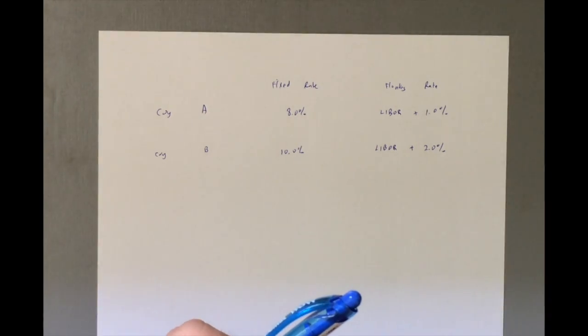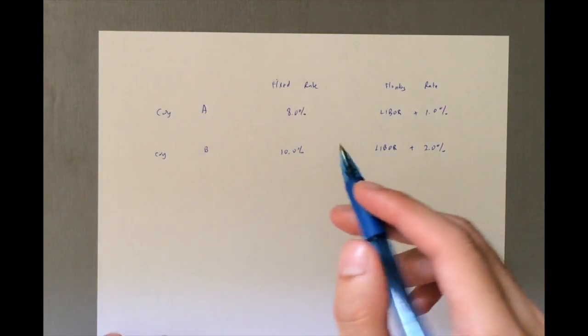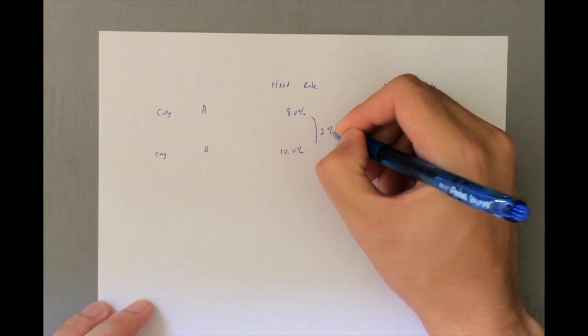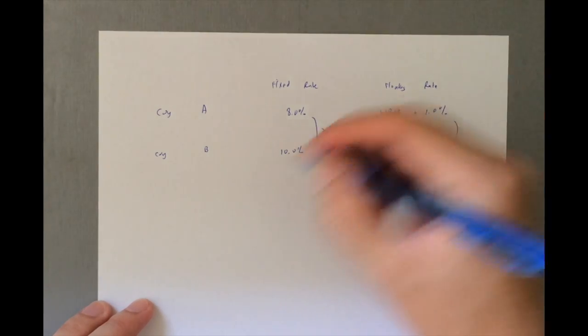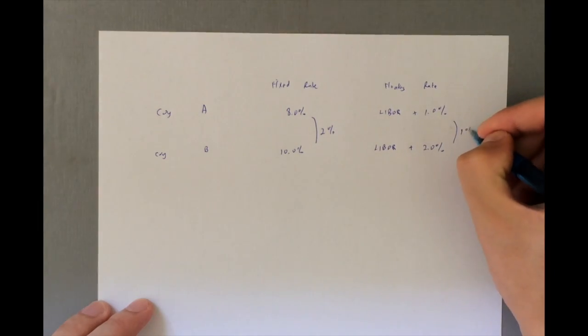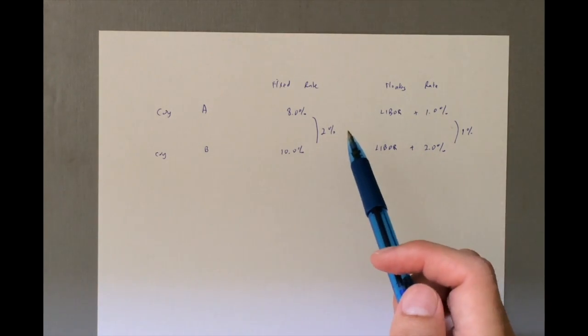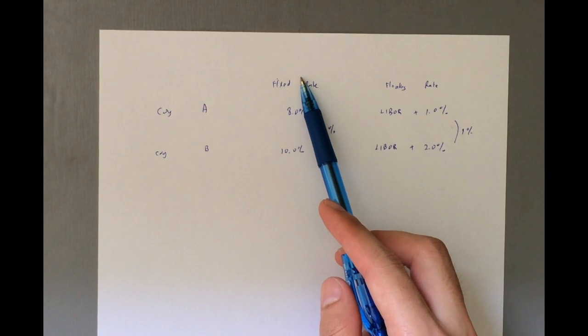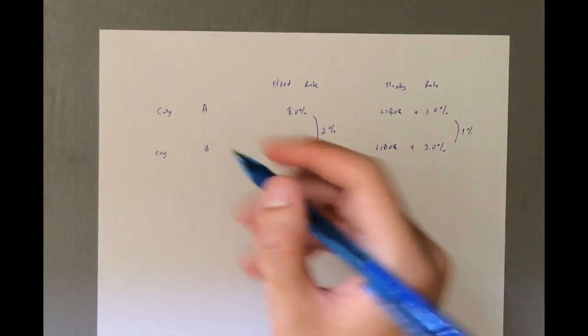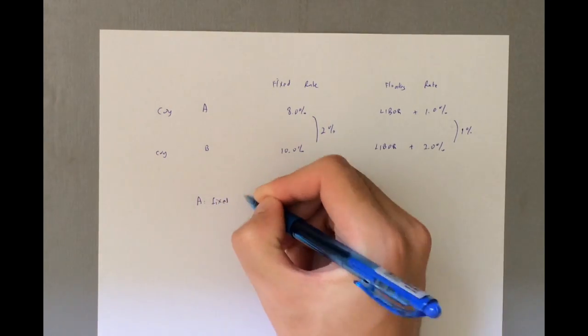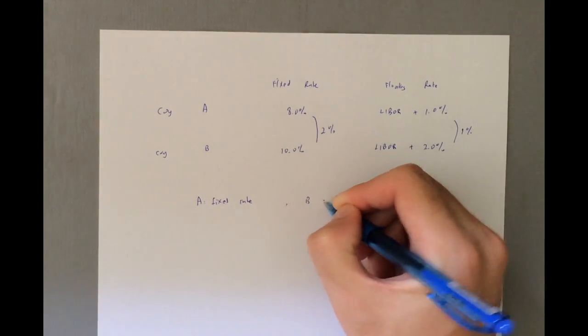But for interest rate swap, we need to take a look at this thing called comparative advantage. So A is better than B by 2% for fixed rate, and A is better than B by 1% for floating rate. So in this sense, A actually has a greater advantage in fixed rate than it has an advantage in floating rate. So the comparative advantage lies for A to get a fixed rate and B to get a floating rate.